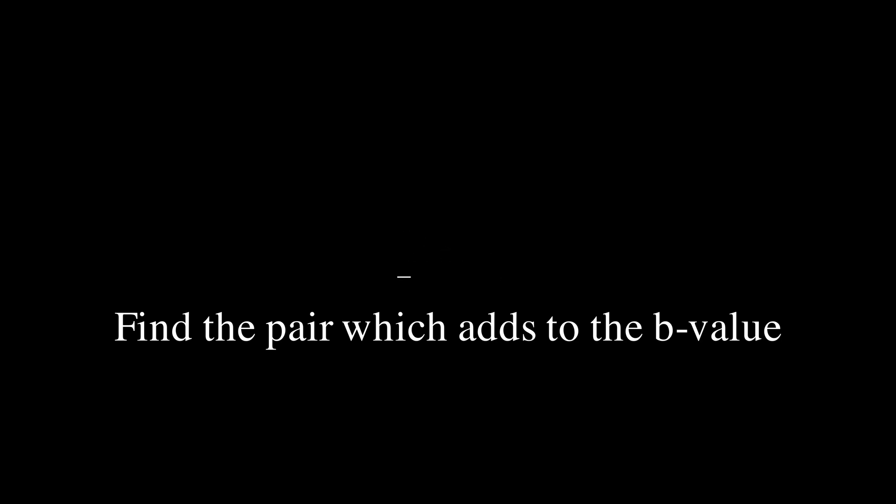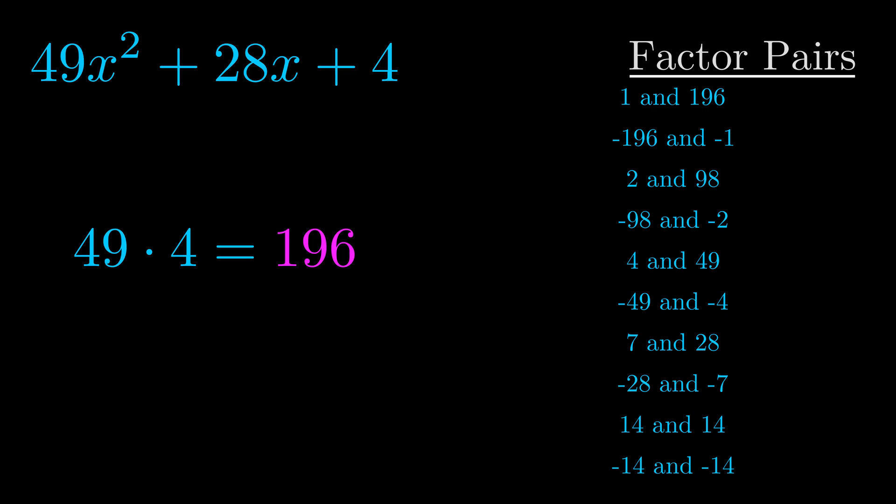The b value is the coefficient on the x term. That's the middle term, the one that we haven't done anything with yet. And really this is the only factor pair that we need.